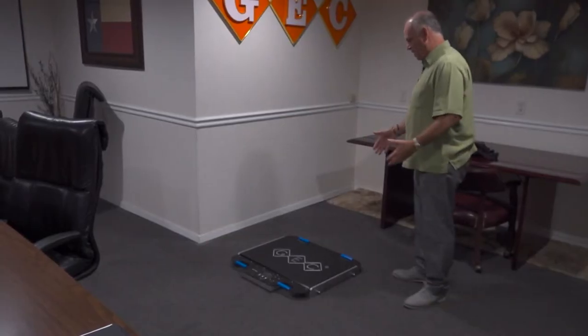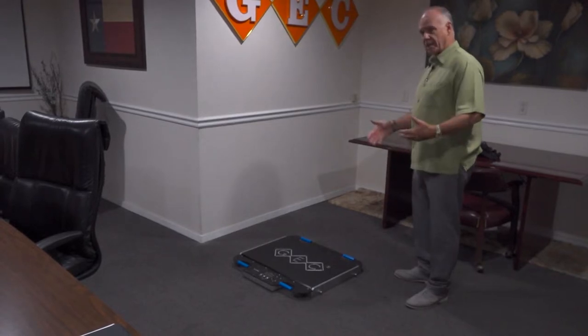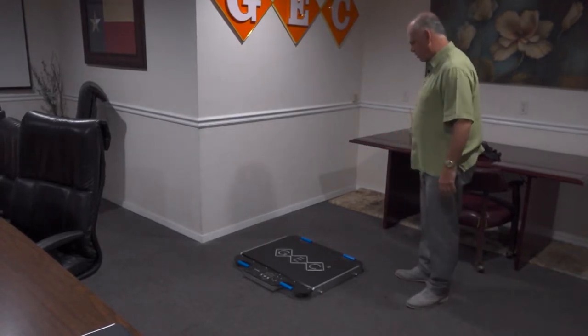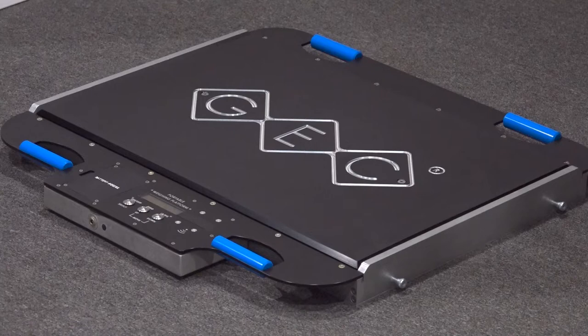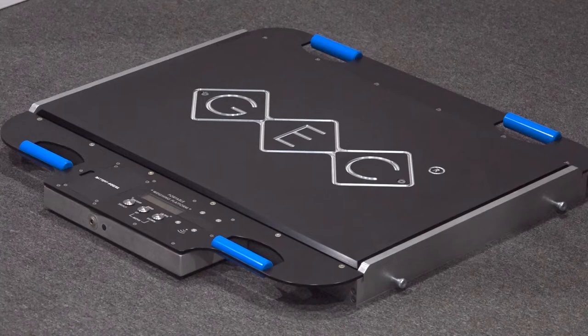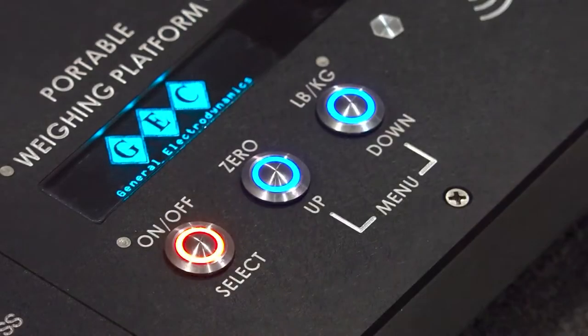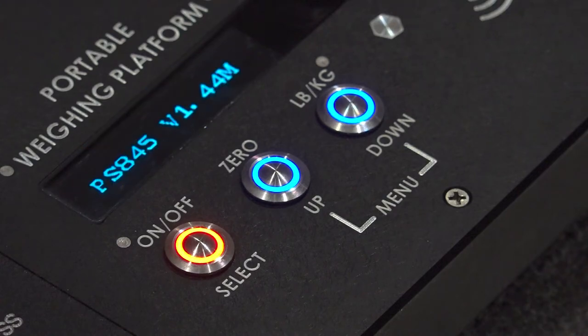This is one of 10 platforms that we've sold to NASA. GEC's scales, each capable of weighing up to 80,000 pounds, were used by NASA to weigh its new moon rocket, the SLS.